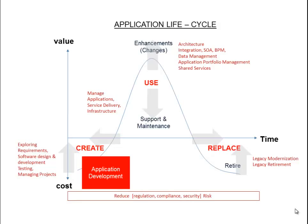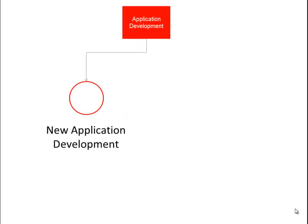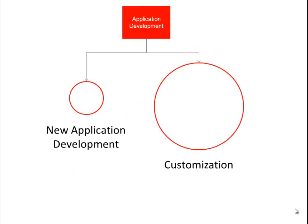There are two types of application development projects: new application development and customizations. New application development is when a brand new piece of software is created, and customizations is when we use existing software but modify it to meet a customer's needs.